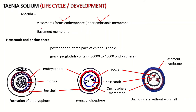Around the morula there is also a basement membrane. The morula then develops into the next stage called the hexacanth. At the posterior end of the morula, three pairs of chitinous hooks are formed, giving a total of six hooks — which is why this stage is called hexacanth, meaning having six hooks.